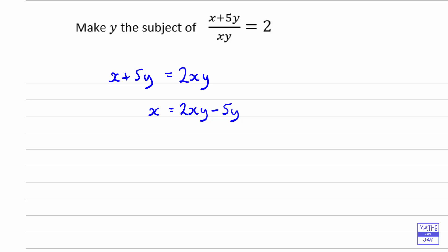Now because we want to write in the end y equals something with y on the left hand side, I'm just going to swap sides so that we've got 2xy minus 5y equals x. And then on the left hand side we've got the y in both terms so we can factorise. That means we end up with the y only written down once.